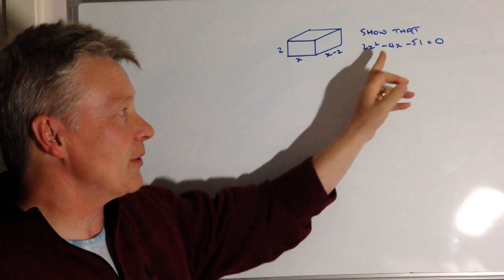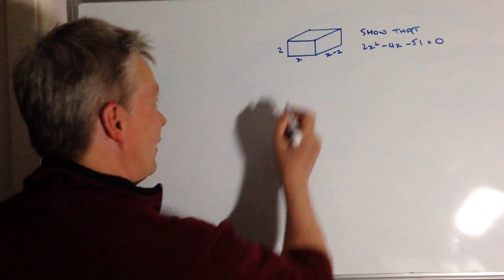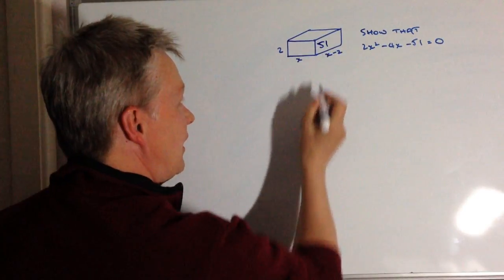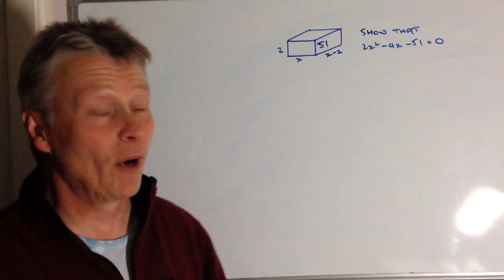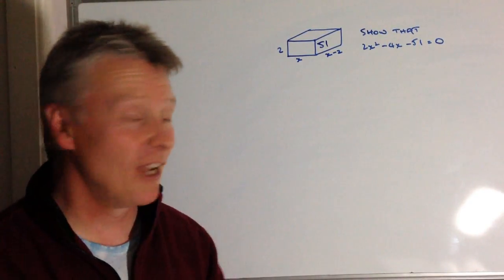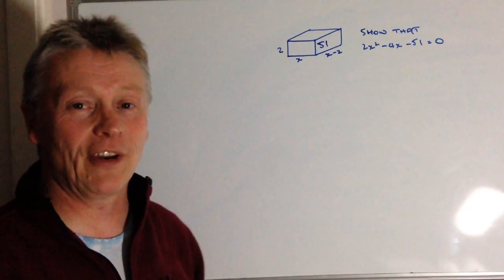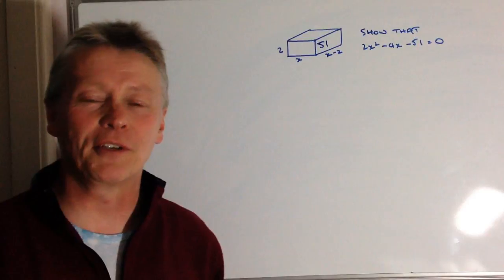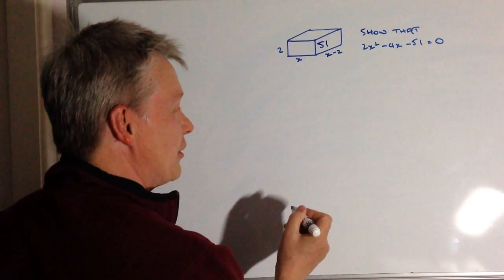So the first thing we have to do is show that the volume of this particular box equals 2x squared minus 4x minus 51 when they tell us the volume is 51 cm cubed. The second thing we have to do is work out the value of x, and that's going to involve using the quadratic formula. Let's deal with the first question first.